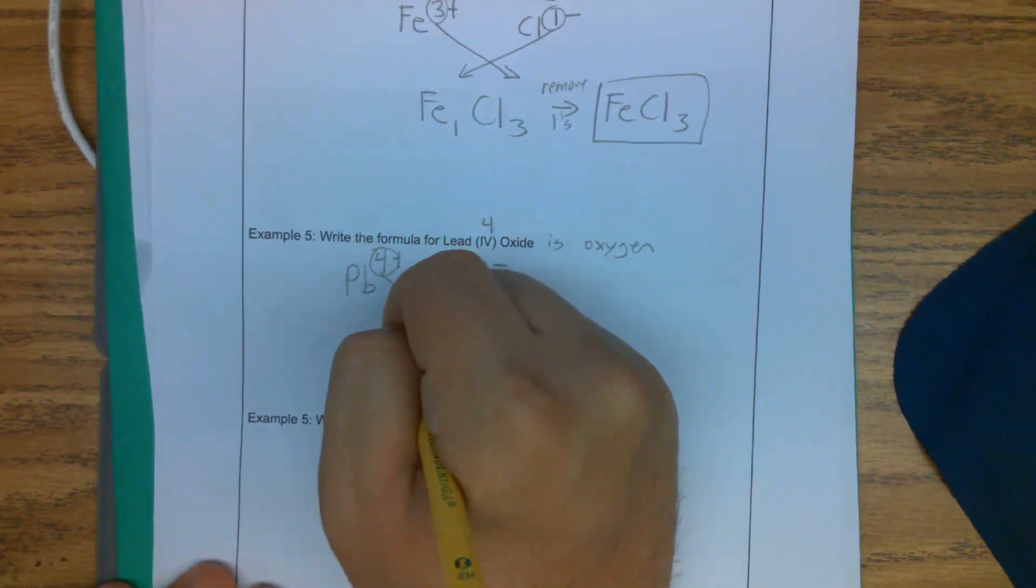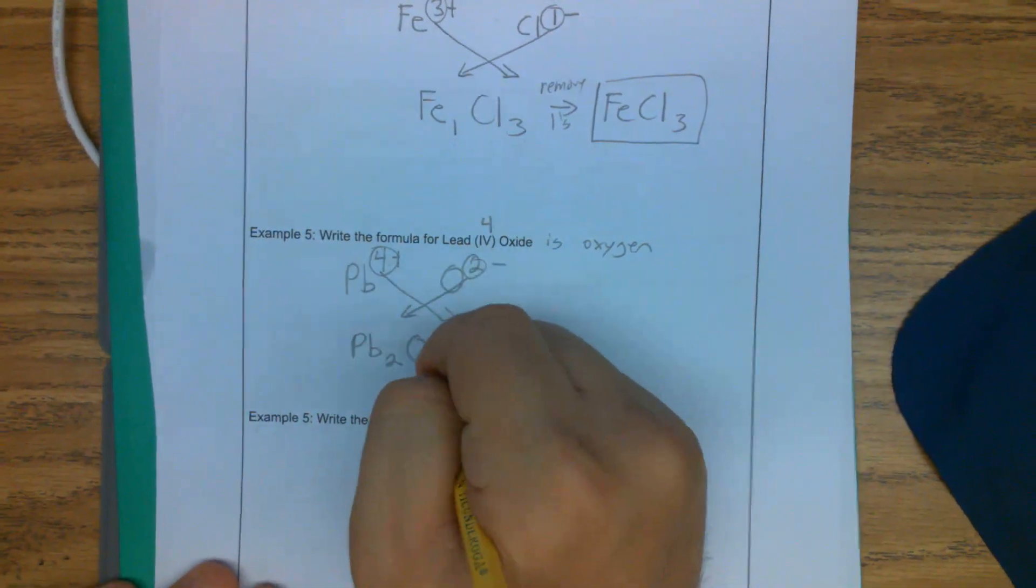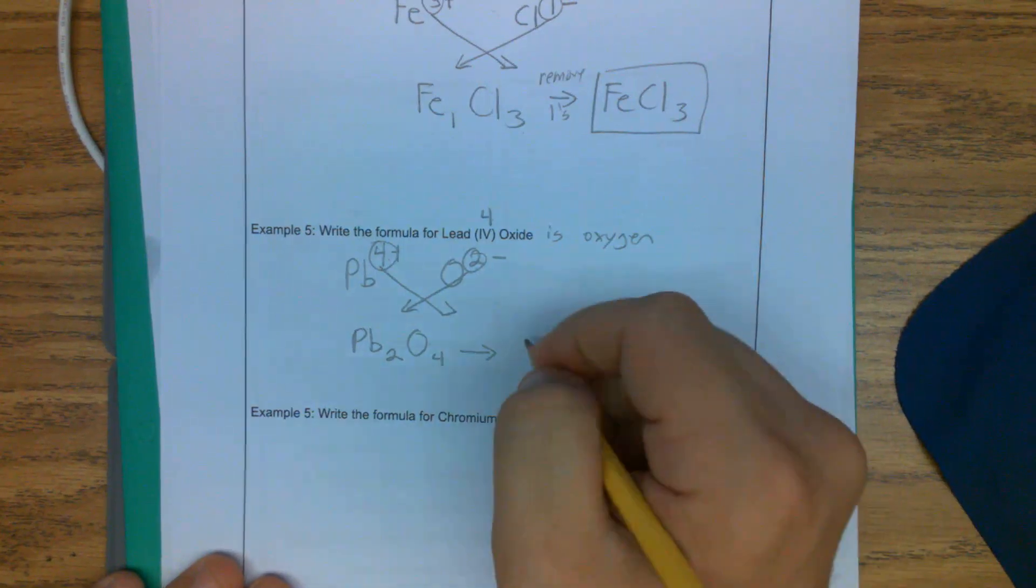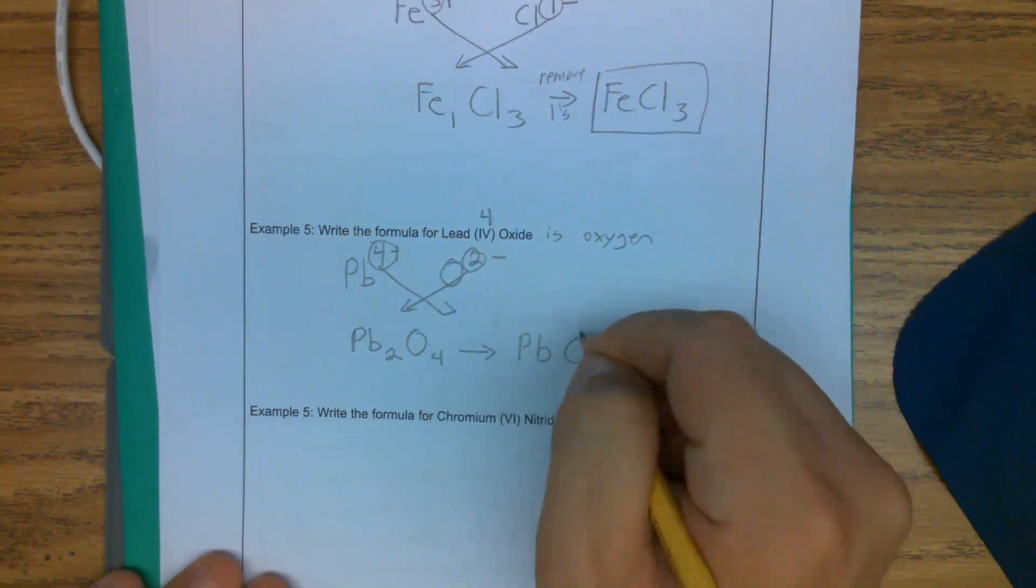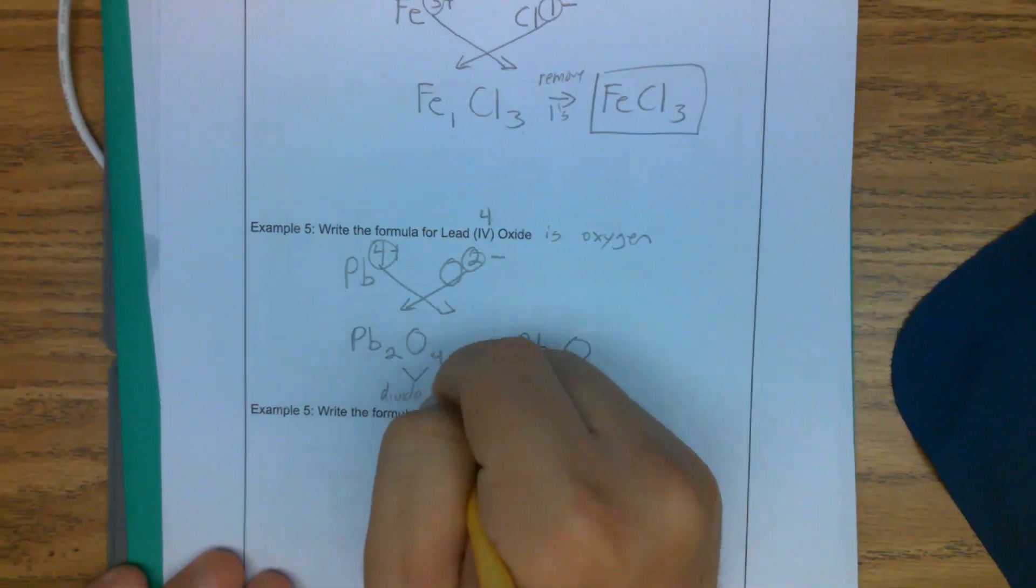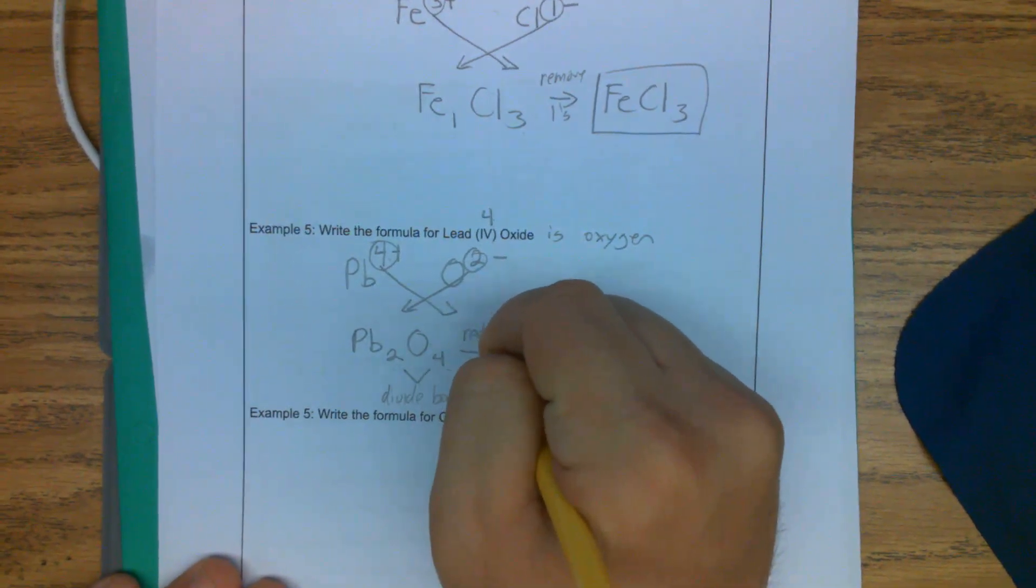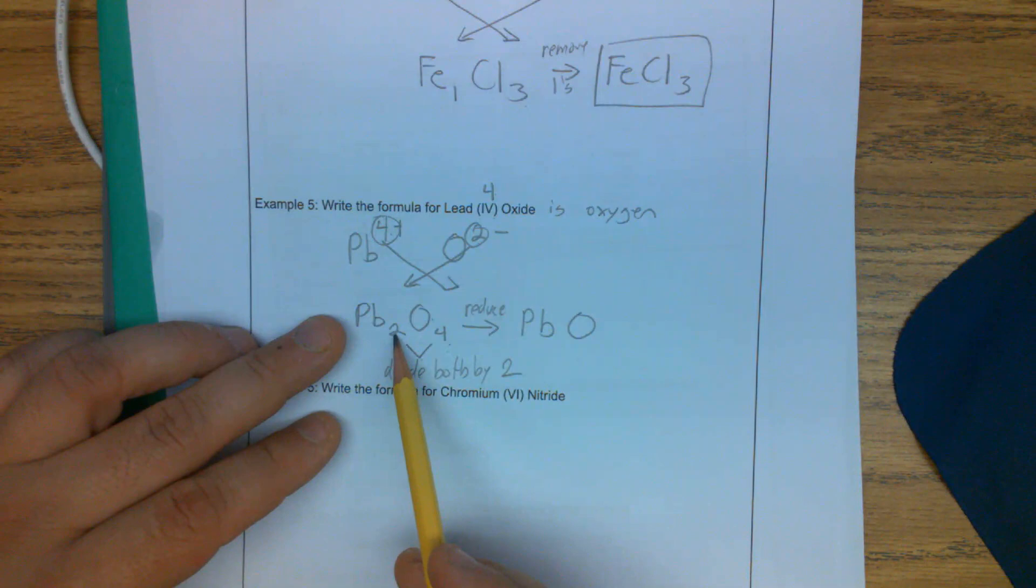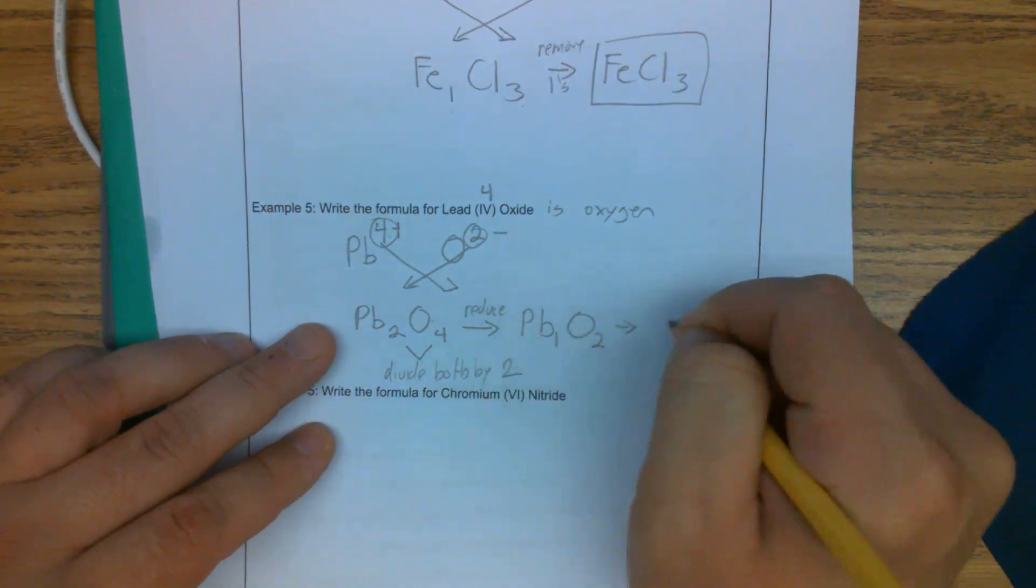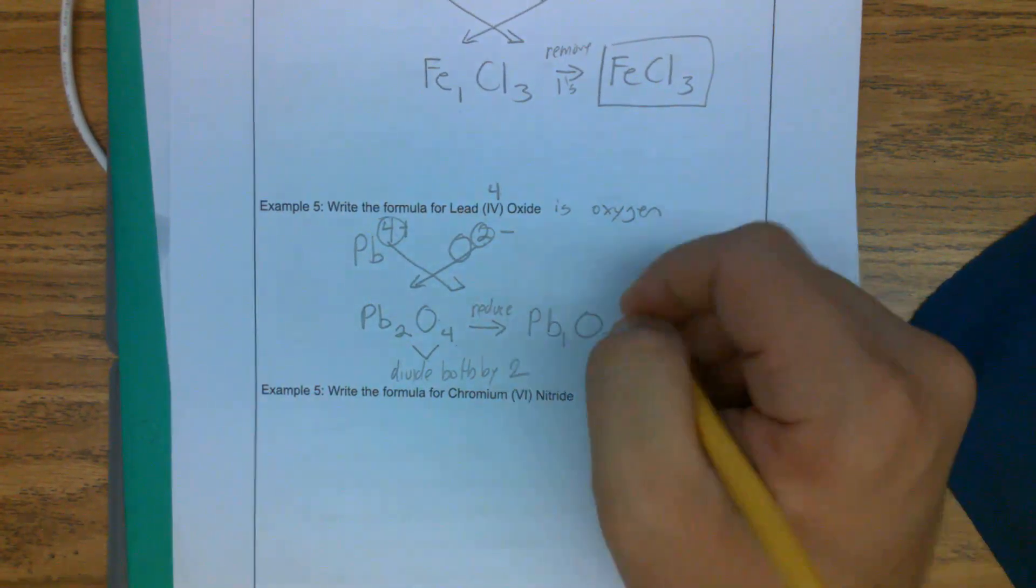So here we're going to do our crisscross method again. So we get PB. The two comes down here. Our O. The four is going to come down here. So we get PB2O4. So this would become PB when we reduce. Both can be divided by two. So we can reduce this. We always want the smallest number possible for each of these. So a two and a four is the same as a one and a two. So we get PB1, O2, or PBO. So that would be our correct answer after we remove hormones.